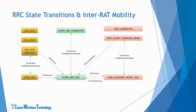To move between different RATs in connected and idle mode, the UE performs various mobility procedures such as cell selection in idle mode and handovers in connected mode. RRC state transitions also happen while moving between different RATs. When the UE is in EUTRA RRC idle state, it performs cell reselection from LTE to WCDMA, where it transits to UTRA idle state. When it reselects to GSM, it transits to GSM idle or GPRS packet idle state.